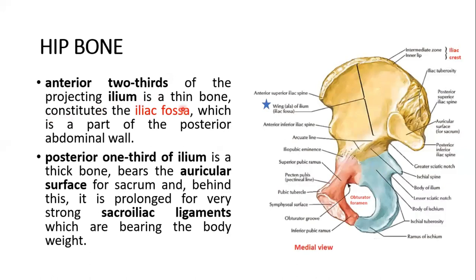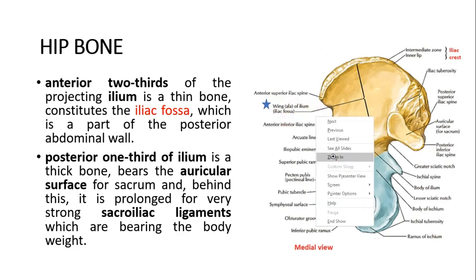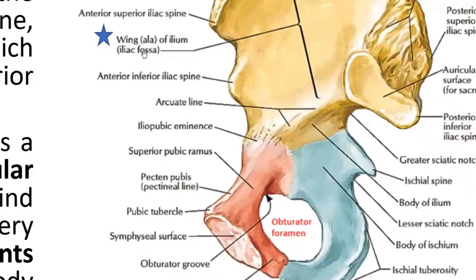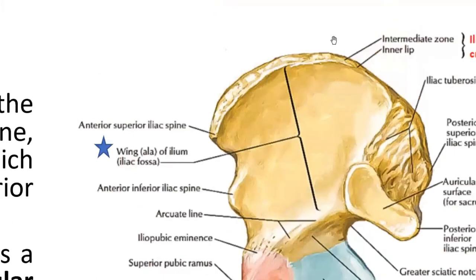The anterior two-thirds of the projecting ilium is a thin bone constituting the iliac fossa, which is part of the posterior abdominal wall. This is the wing of the ilium — you could see this is the iliac fossa very vividly and clearly.